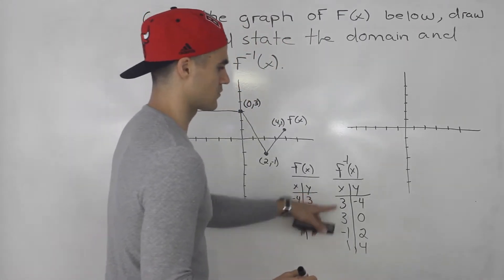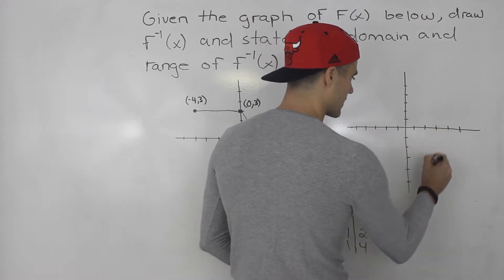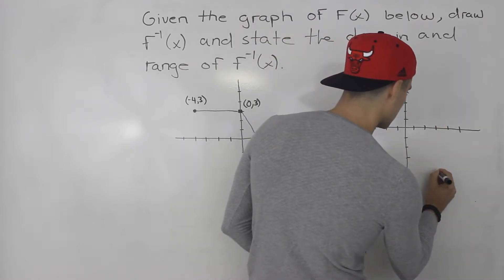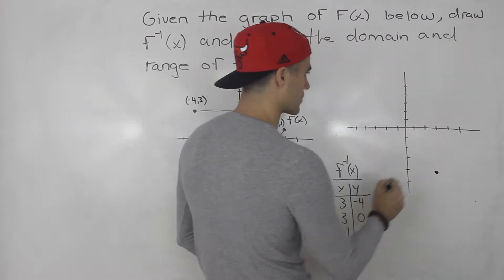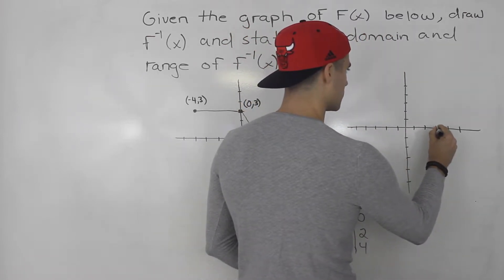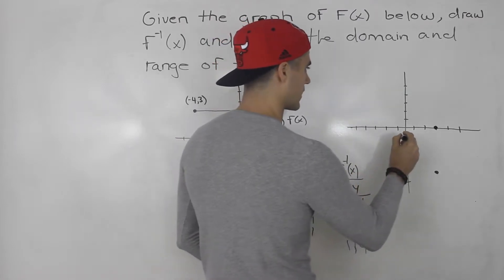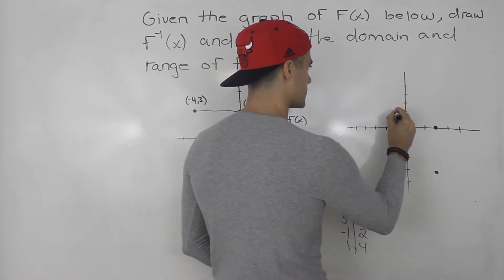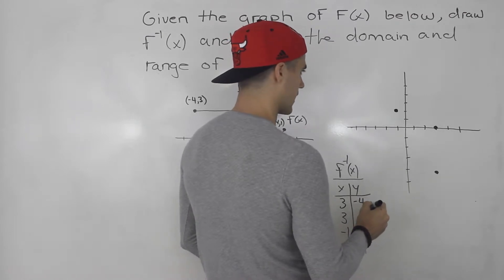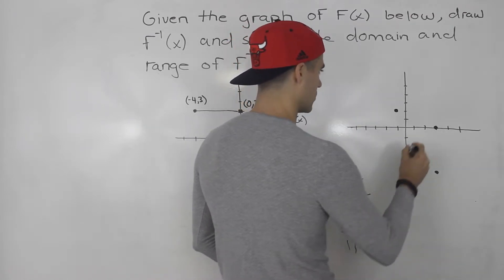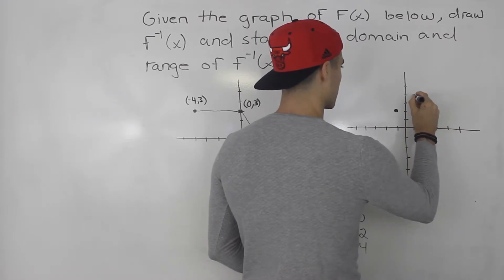So now we could plot these. So 3 and negative 4 is down here. Then we've got 3 and 0, which is up there. And we've got negative 1 and 2, which is here. And then we've got 1 and 4, which is up there.